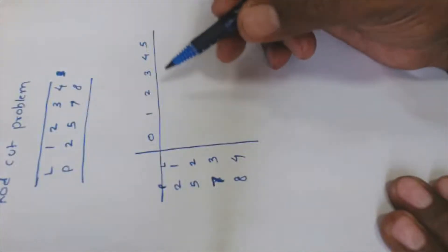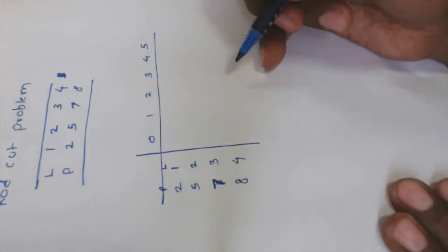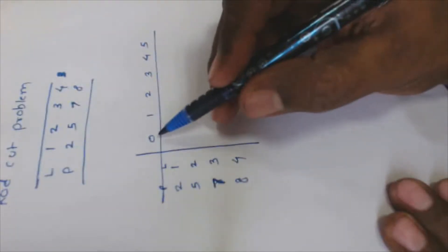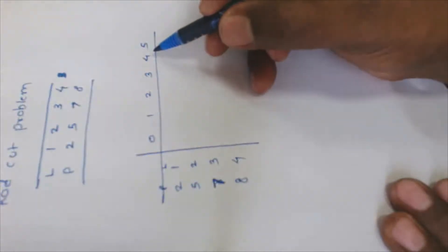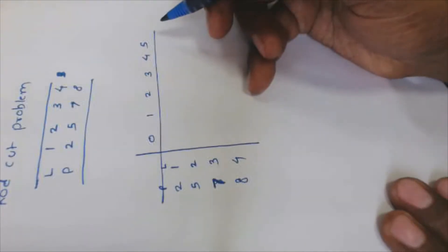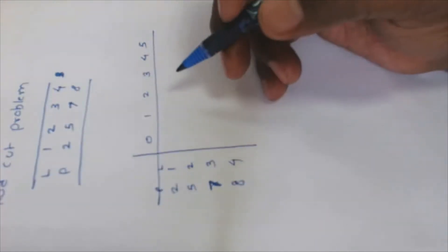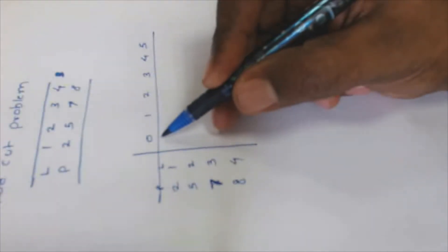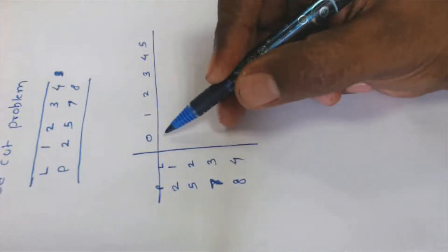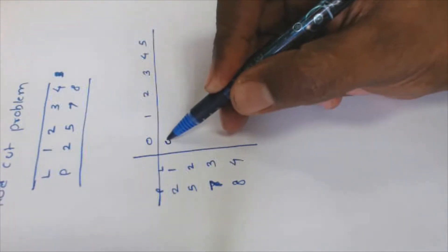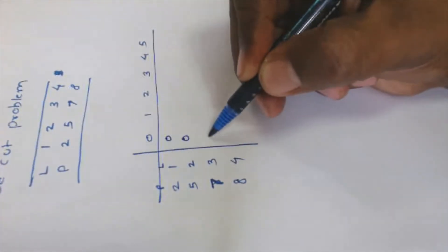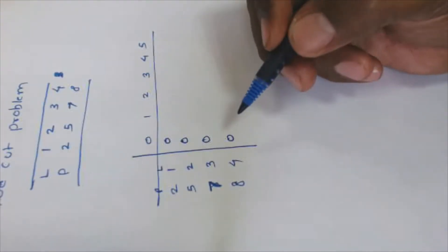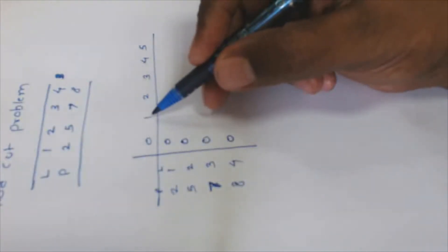We will arrange this in tabular form to find the best output. The possible rod lengths are zero, one, two, three, four, and five. If the rod length is zero, we will not achieve anything since no rod exists, so in all those situations we get zero as output.